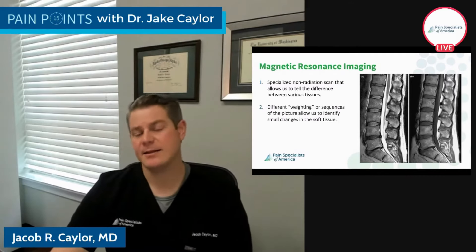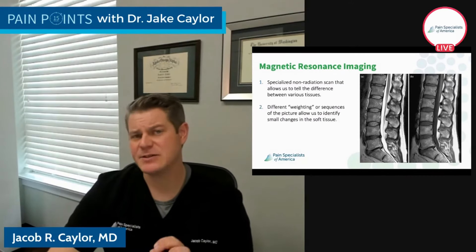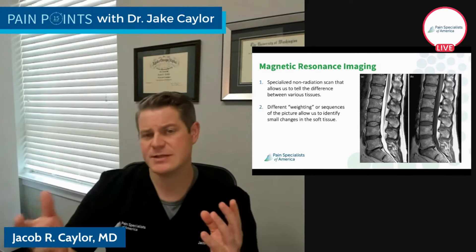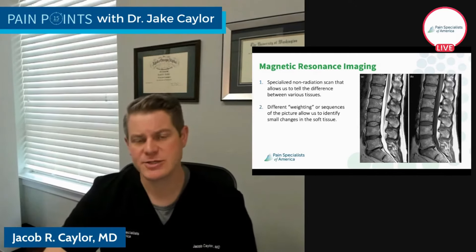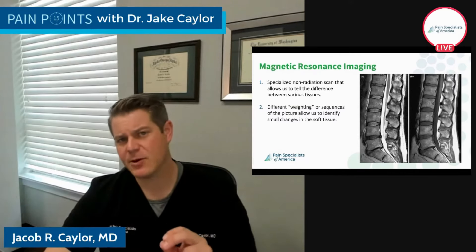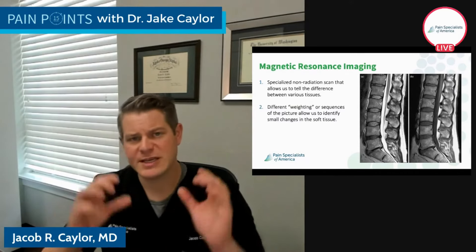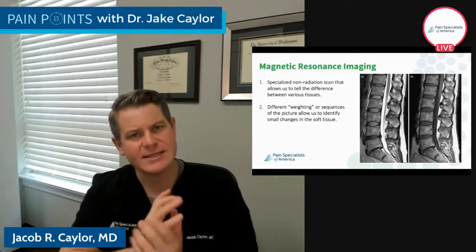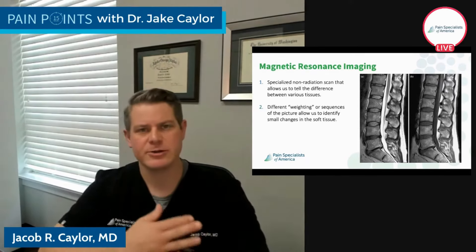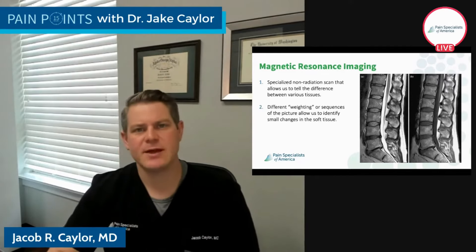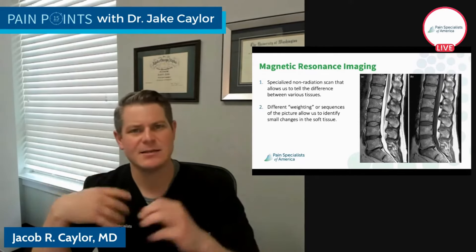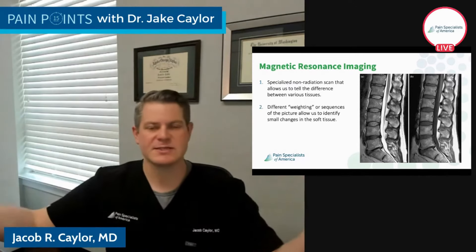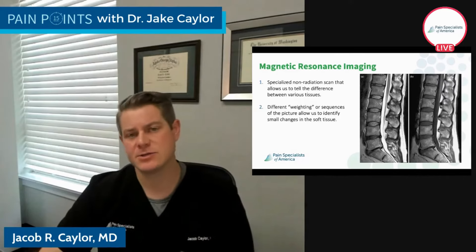The different weighting allows us to see even small changes — we don't need to see just huge changes; these can be very, very small. With MRI specifically, in order to get better focus and more clarity and detail in the picture, we need a stronger and stronger magnet. That's one of the things when you hear about the Tesla ranking system: 1.5 Tesla versus 3 Tesla versus 7 Tesla. All of these are really important in determining the clarity of the picture.